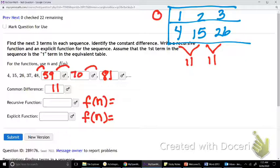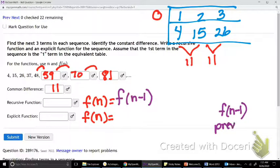For a recursive function, we use this term called f(n-1). f(n-1) is basically a term that means the previous number on our table. So f(n-1) tells us that we're looking at the previous number.